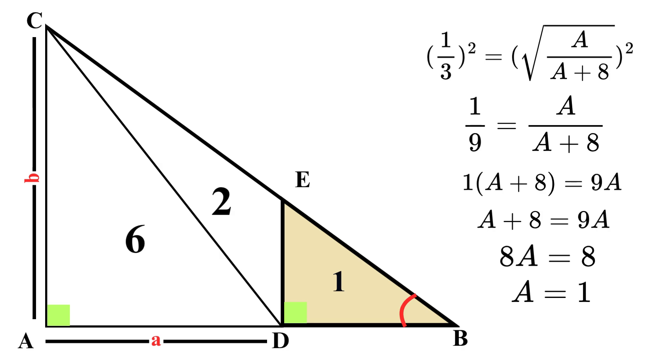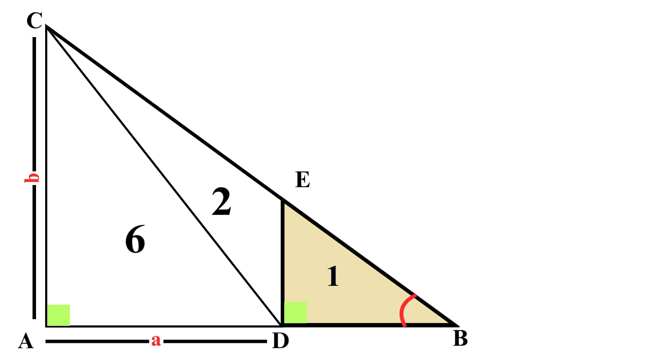Now it's pretty easy to find the area of the whole triangle, since the area is equal to the sum of the areas of all 3 triangles inside it. So the area of the big triangle is equal to 1 plus 6 plus 2, which equals 9 square units. And that is our final answer.